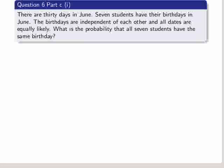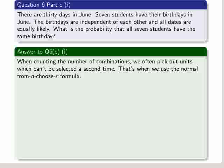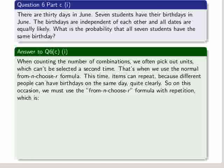Now moving on to part C, which was the interesting one. There are 30 days in June. Seven students have their birthdays in June. The birthdays are independent of each other and all dates are equally likely. What is the probability that all seven students have the same birthday? Now when counting the number of combinations we often pick out units which can't be selected a second time. That's when we use the normal n choose r formula. This time items can repeat because different people can have birthdays on the same day quite clearly. So on this occasion we must use the n choose r formula but with repetition.